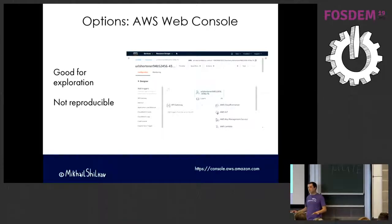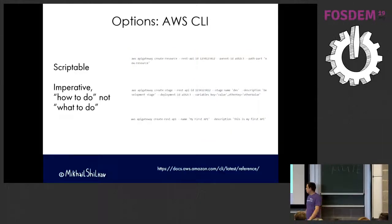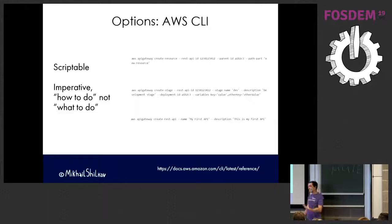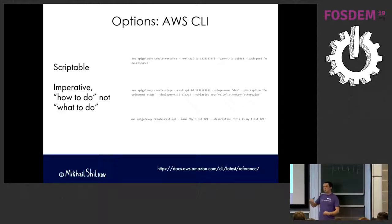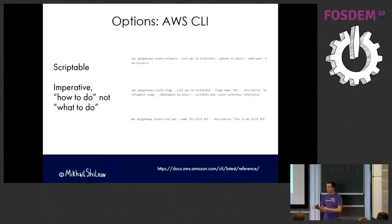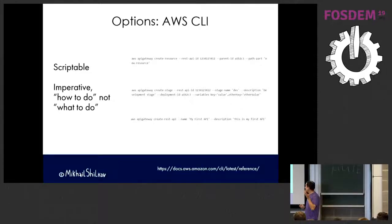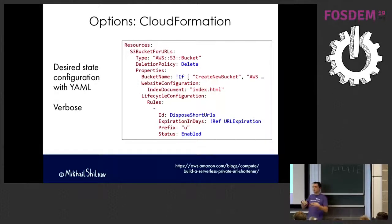Another option is the AWS CLI - a command line interface tool you install that lets you do everything you could do in the web console with commands. Once you're done with the script you can save it to source control and share it with colleagues. The problem with scripts is that they're very imperative - you say what to do step by step in exact order, instead of describing your desired environment as you want it to be.